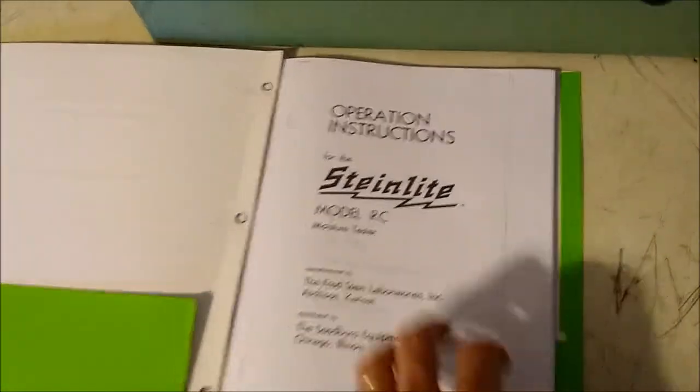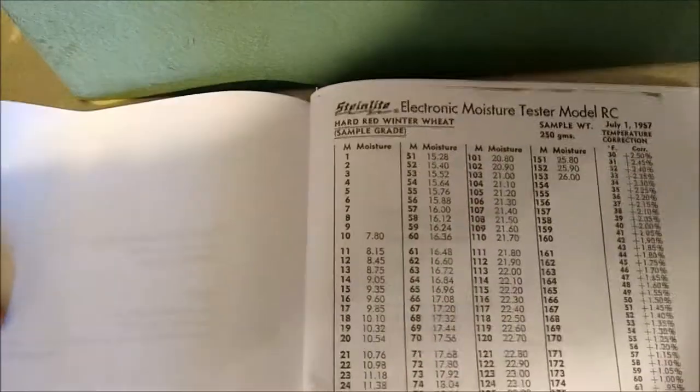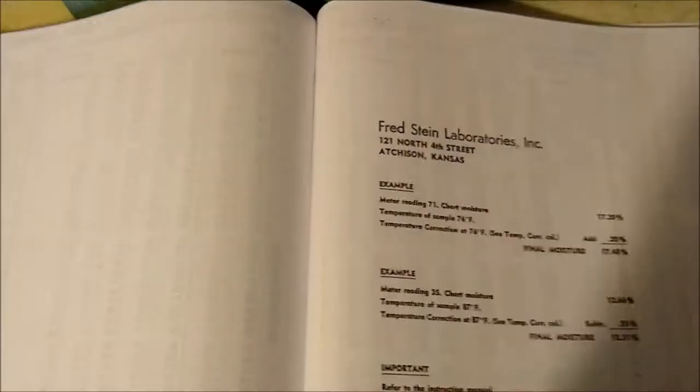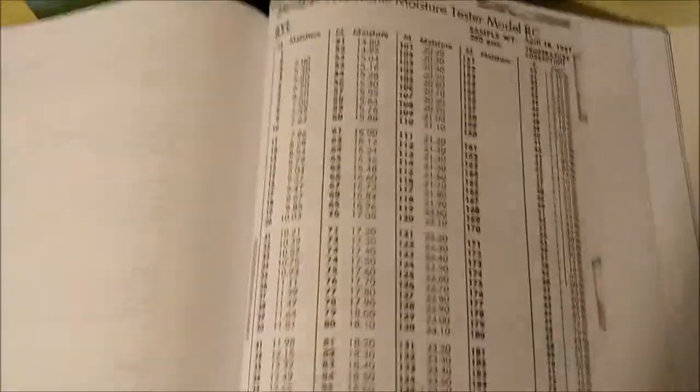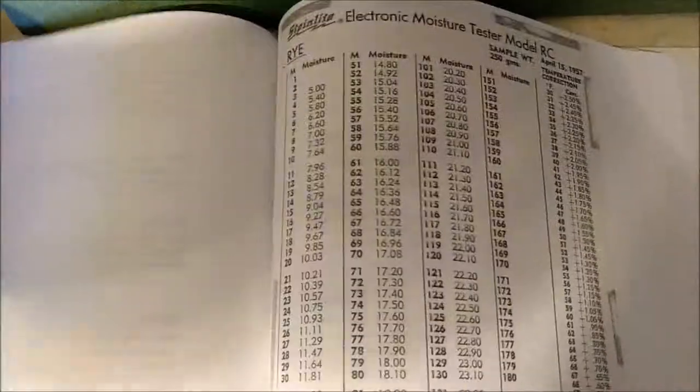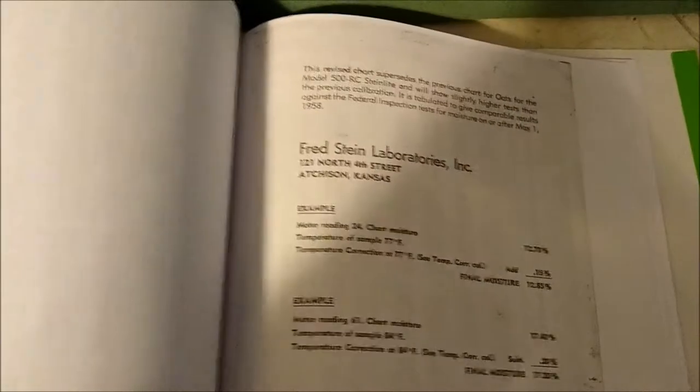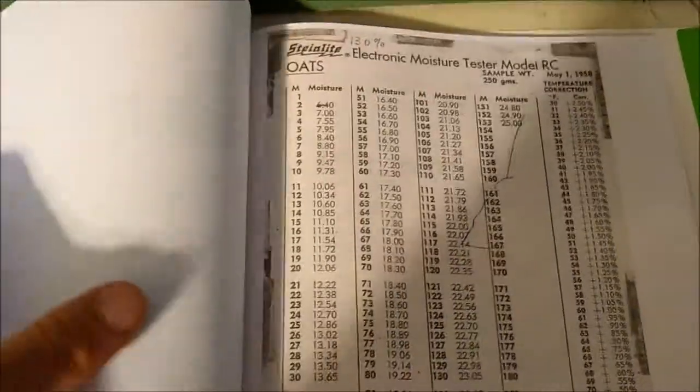It comes with the operator's manual and we have all the charts with it for testing various crops. You have your hard red winter wheat chart there, hard red spring wheat. All of the examples are on the back. This is your rye chart. Several different crops can be tested with this using these charts, including oats.